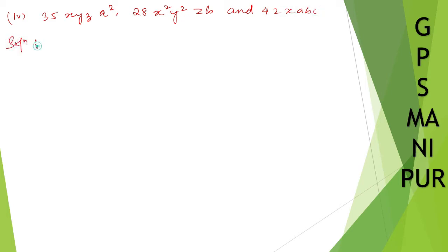Solution. So, this first one that is 35 x y z a², I can write down as 35, the factors of 35 are - or leave it, let me just write down 35 and afterward I'll find it out.